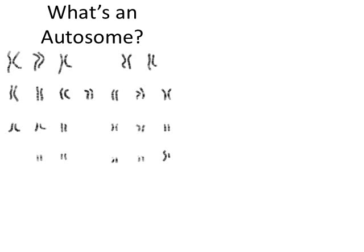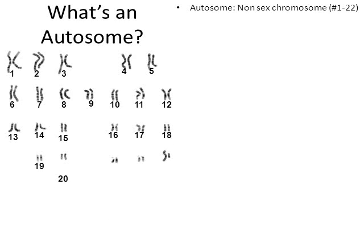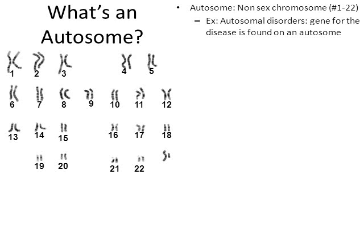So what's an autosome? Looking at a karyotype, an autosome by definition is a non-sex chromosome — chromosomes 1 through 22. In a karyotype we've all inherited two chromosome 15s, two chromosome 21s, two chromosome 3s — these are all called autosomes. Chromosome 23 can be XX for a female or XY for a male, making those the sex chromosomes. Autosomes are all the others. Autosomal disorders are caused by a gene located on one of these 22 chromosomes.